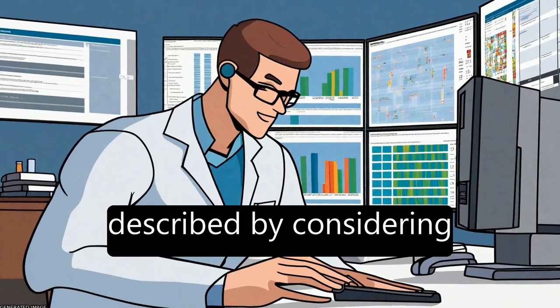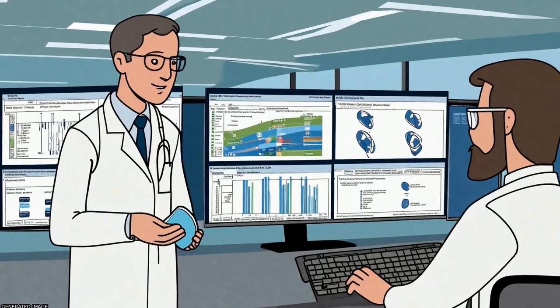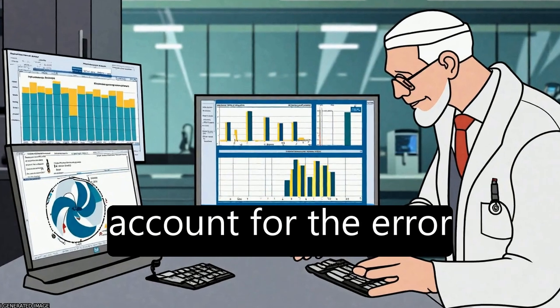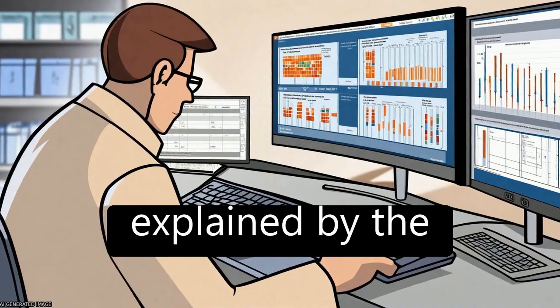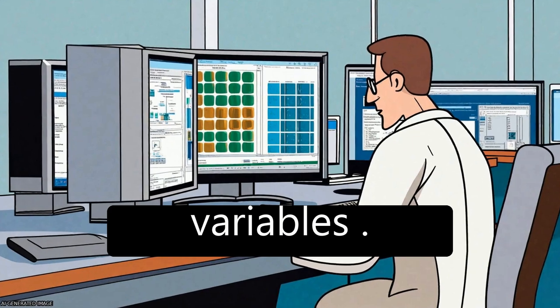These factors can be described by considering seven variables. No single variable can account for the error rate distribution, but most of the variation is explained by the combination of all seven variables.